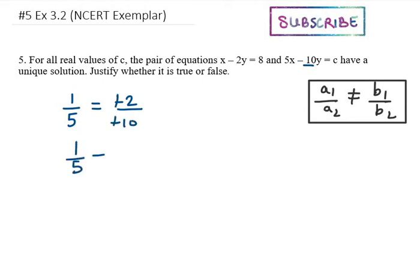That is, a1 over a2 is equal to b1 over b2. But this is not possible in the case of unique solution. In unique solution, they must not be equal.